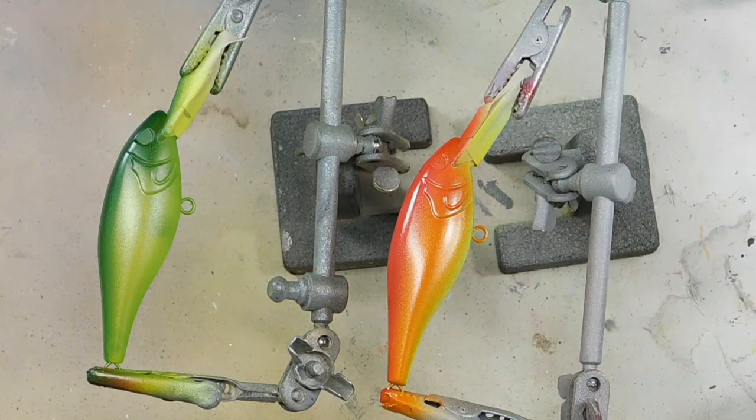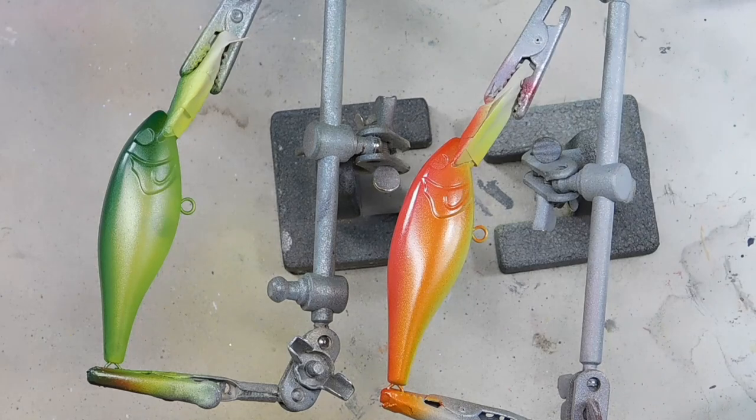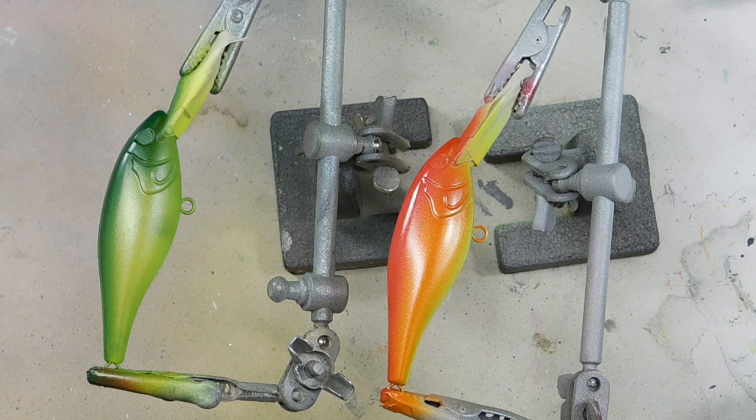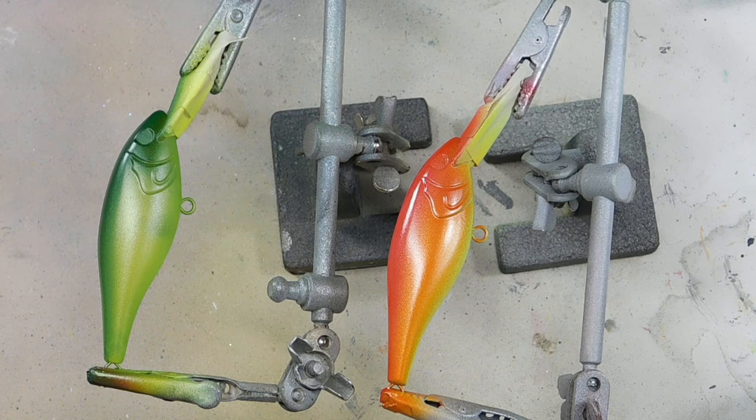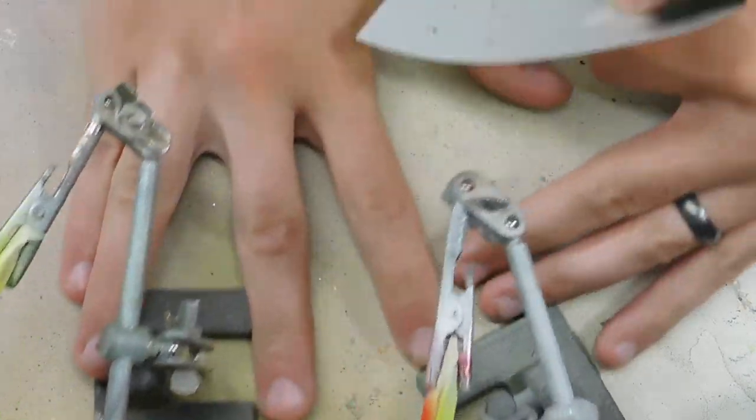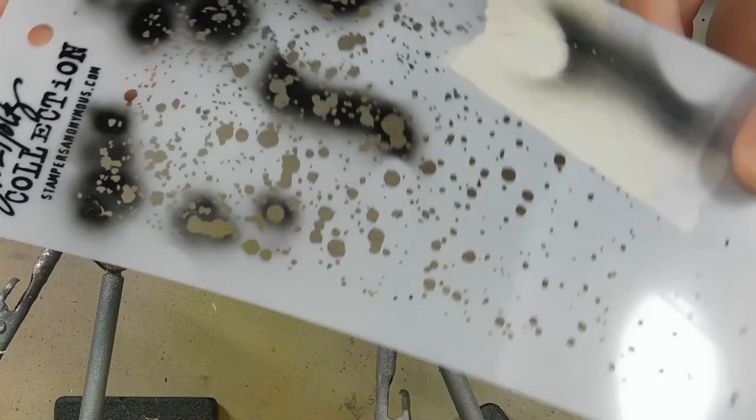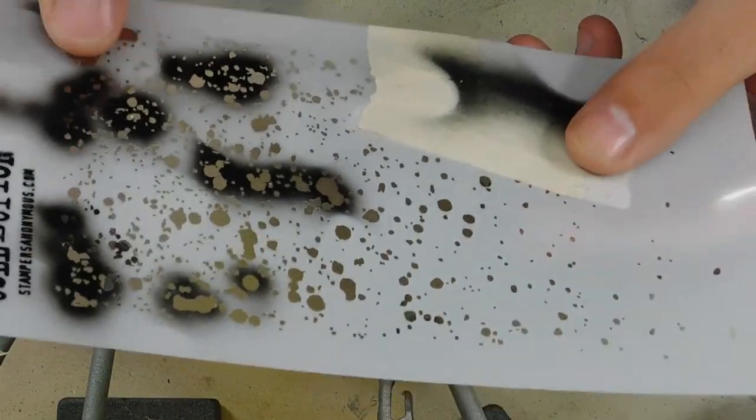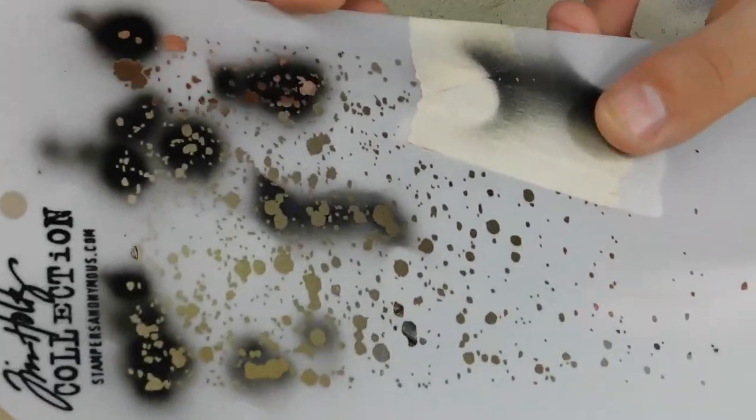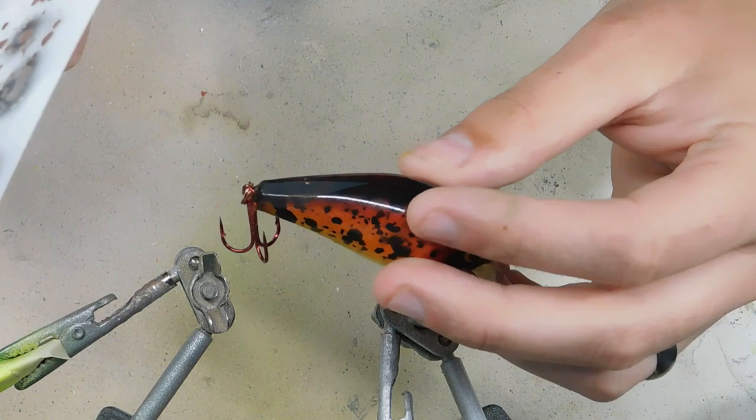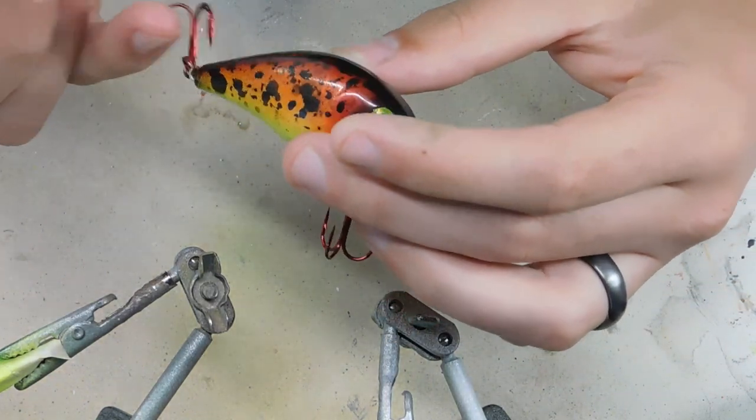The stencil I'm going to be using is one from Hobby Lobby. I gotta find it. All right, so I found the stencil. It is part of the Jim Holtz collection. It's got a whole bunch of different paint splatters on it. As you can see, there's the couple that I've used. I've had this hanging in my shop for probably a year now, and I just now actually started using it. I absolutely love the way it turned out on this other lure, which is why we're doing it again.